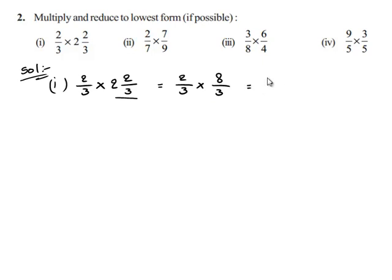This is equal to 2 multiplied by 8 upon 3 multiplied by 3, which is equal to 2 times 8 is 16 upon 3 times 3 is 9. This can be written as 1 and 7 upon 9.